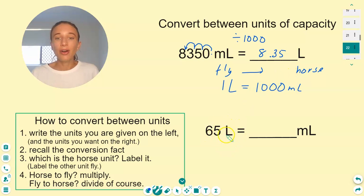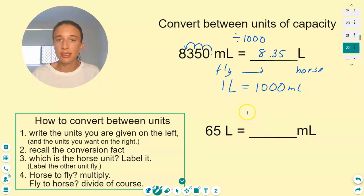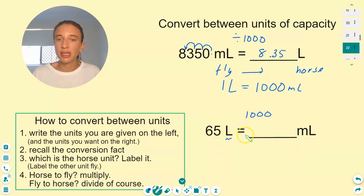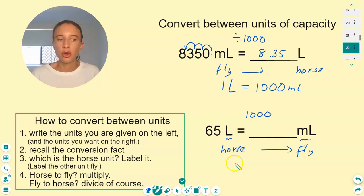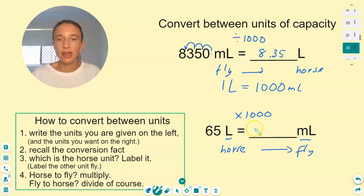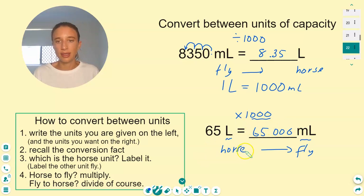Now, 65 liters is how many milliliters? We have the conversion factor linking liters to milliliters. Which is bigger, one liter or one milliliter? One liter — that's the horse unit, which makes milliliter the fly. Horse to fly, multiply. So we're making the number bigger — just add three zeros on the end.